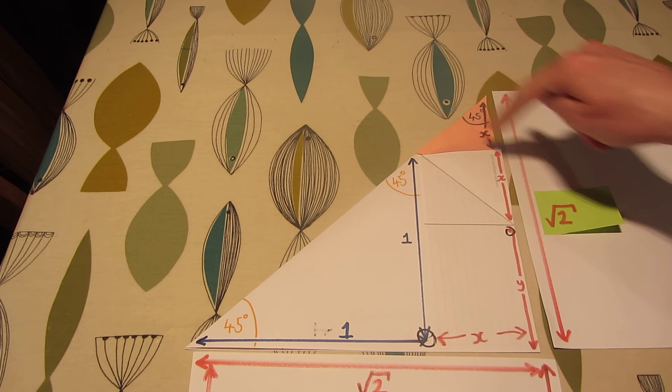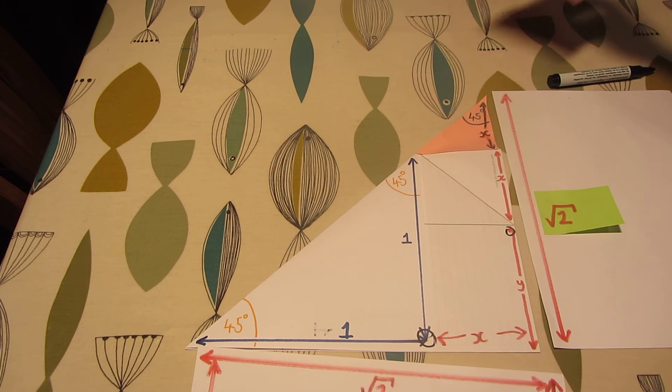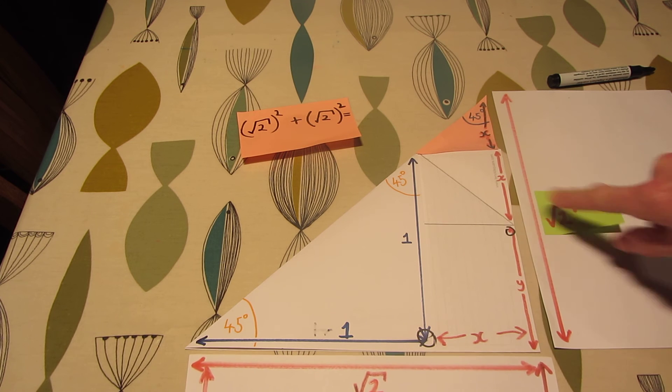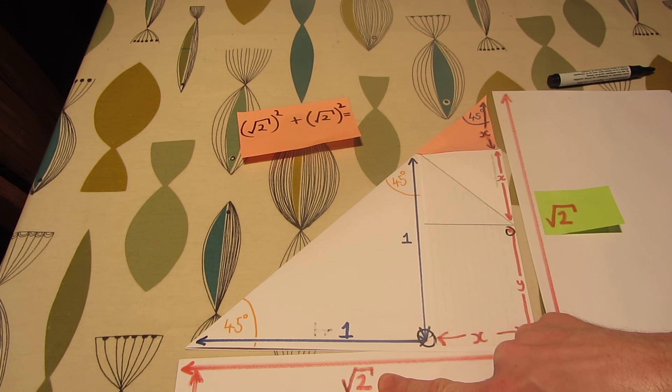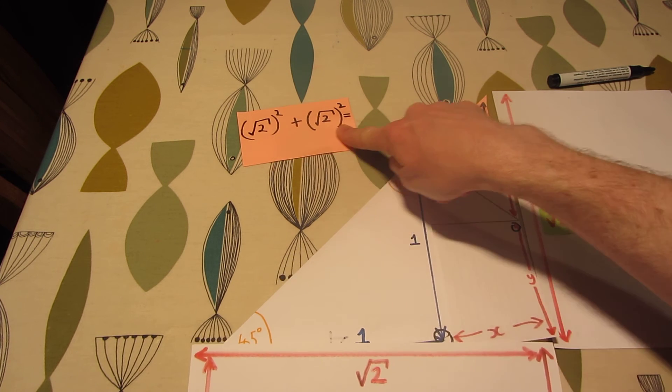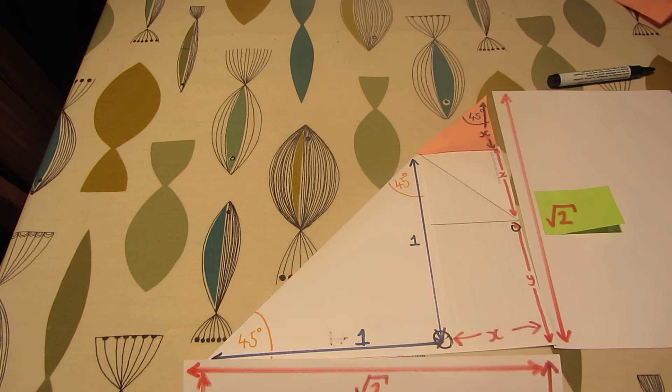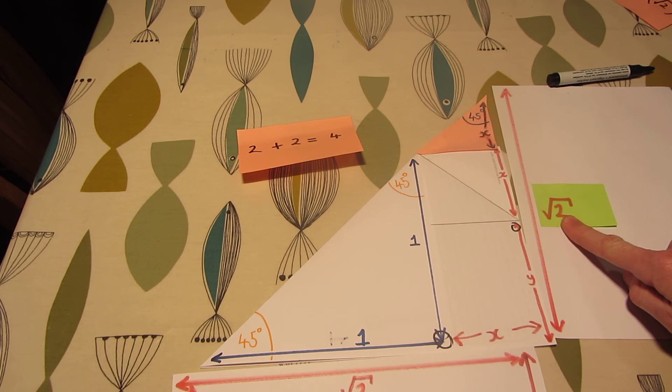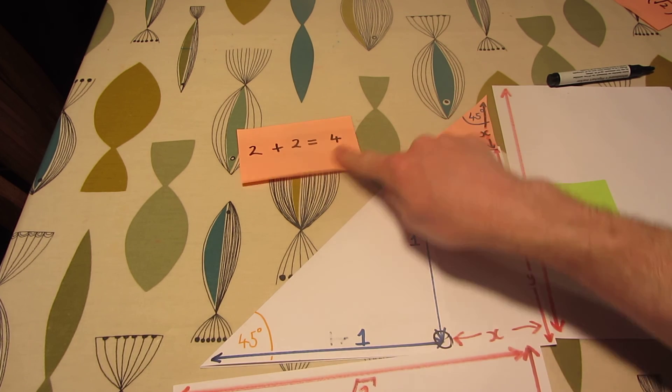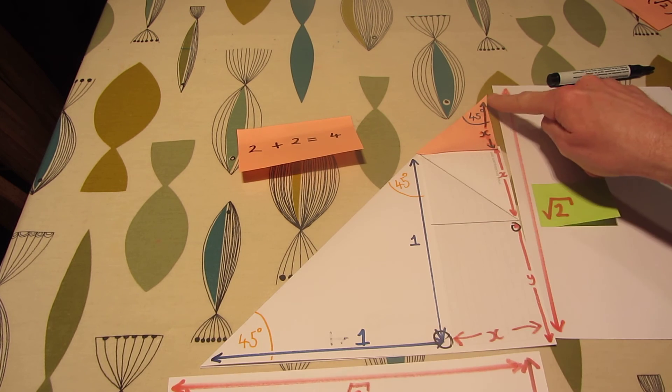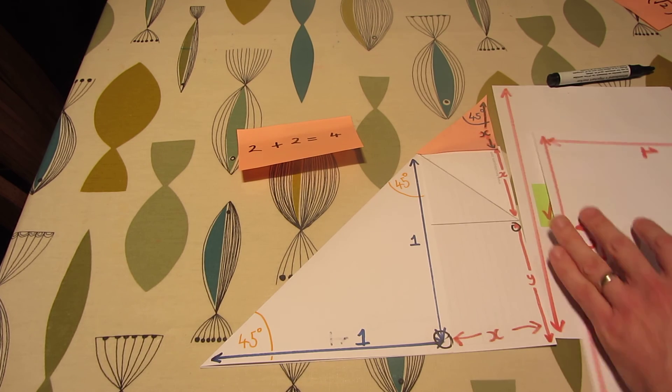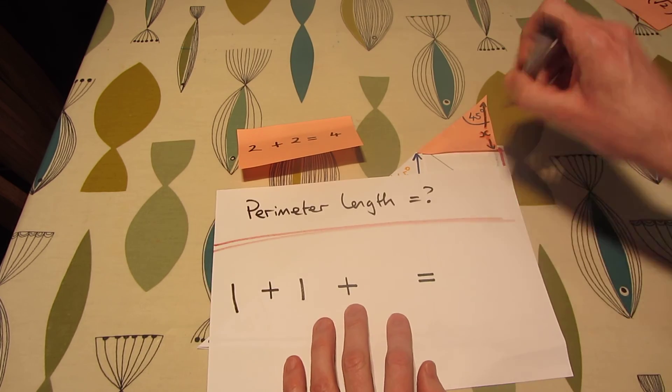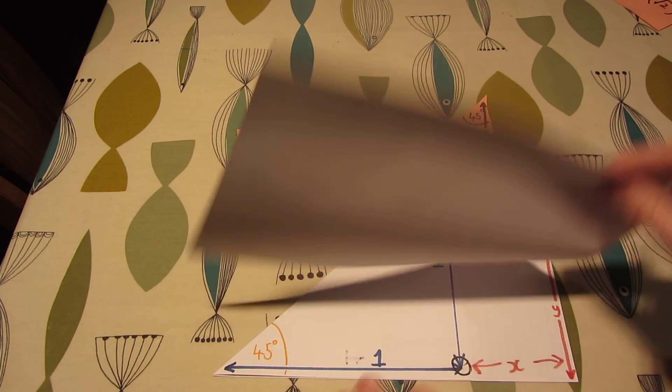So this side must be, well, square of root two plus the square of root two. Square of root two is two. Square of root two is two. Two plus two equals four. So the square of this side is four, and I think you know what the square root of four is. Two.